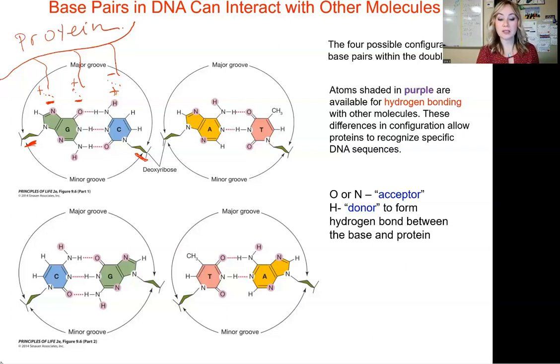If you look at a different pattern where you have A and T, notice the pattern of acceptors and donors is going to be different. C and G, this pattern is again different.